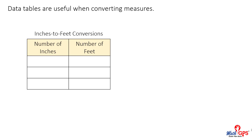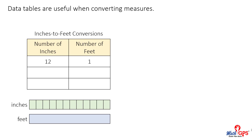What data can be entered into the first line of the table? We know that 12 inches is equivalent to 1 foot. We can calculate that 24 inches are equivalent to 2 feet. What would come next in the data table? 36 inches are equivalent to 3 feet.